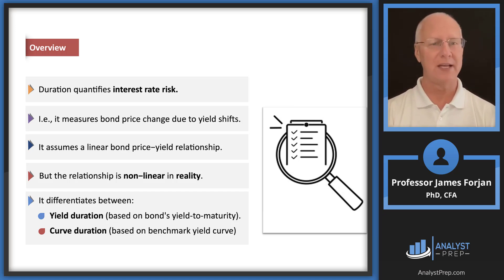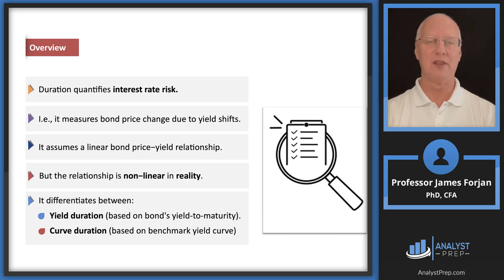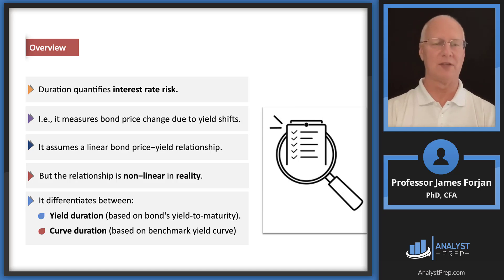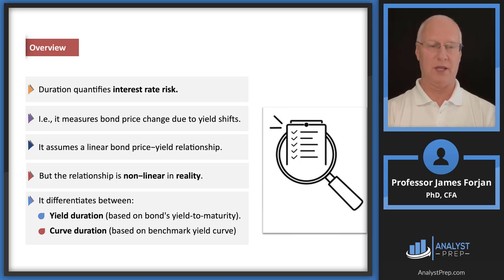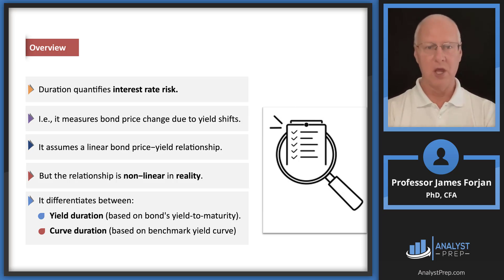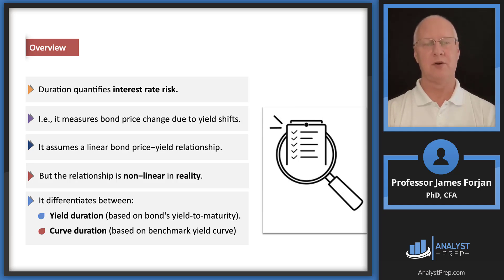The Institute takes you through the steps of computing the very first derivative of that relationship — about four or five lines that brought me back to my doctoral program. I love first and second derivatives, but that's probably not too important for you. What is important is that third gray box: when you take that first derivative, duration is the measure of the slope at that particular point, assuming a linear bond price and bond yield relationship.